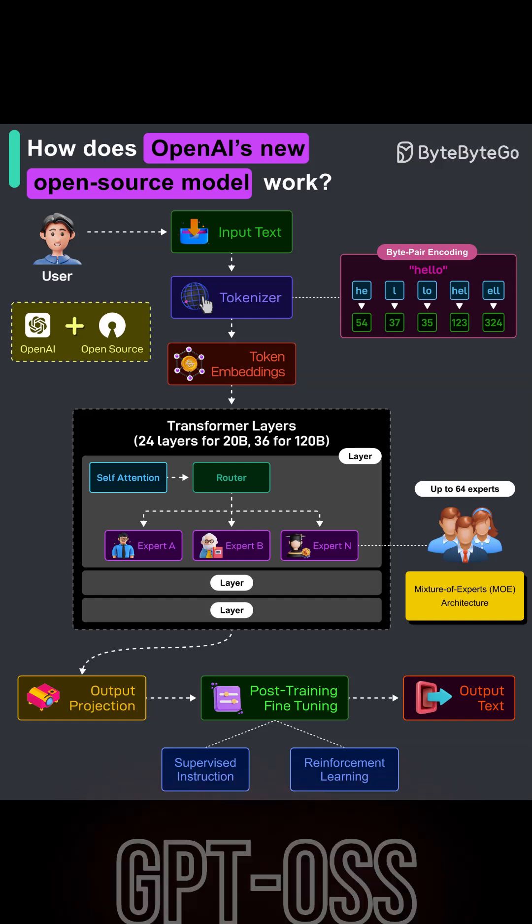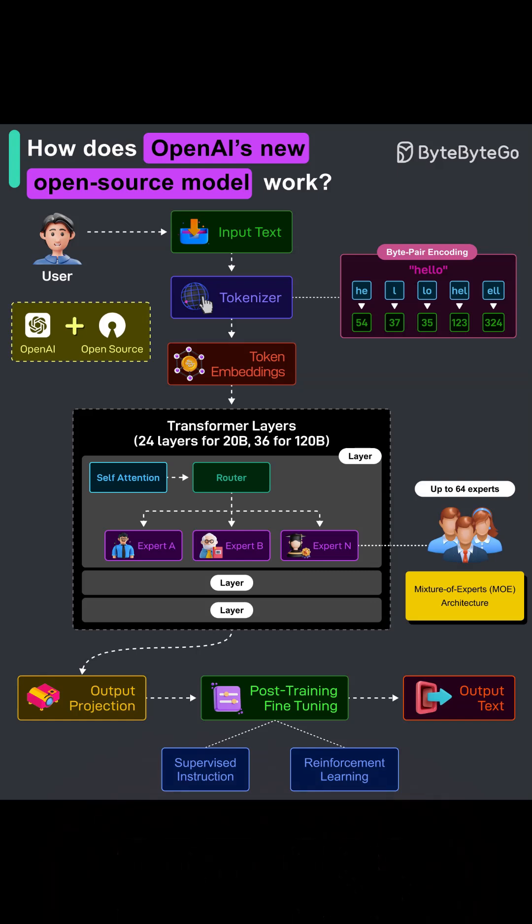A user provides input — maybe 'explain quantum mechanics in a simple manner.' Before a model can understand it, the text is converted into numbers using byte-pair encoding, or BPE. BPE breaks text into frequently used subword chunks, like 'HE' and 'LO', and assigns each chunk an ID.